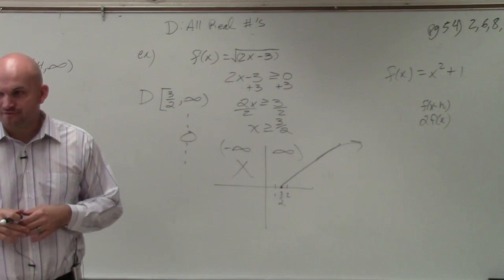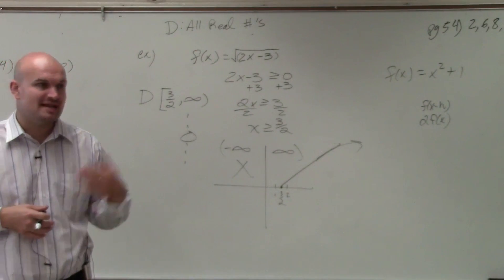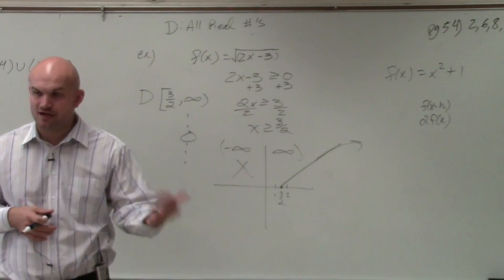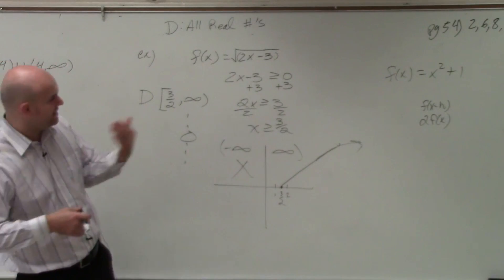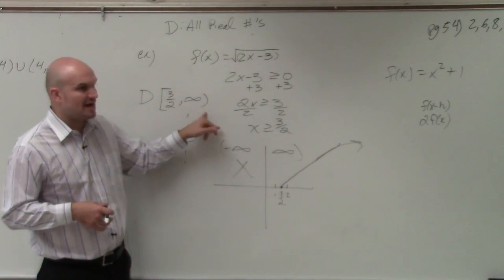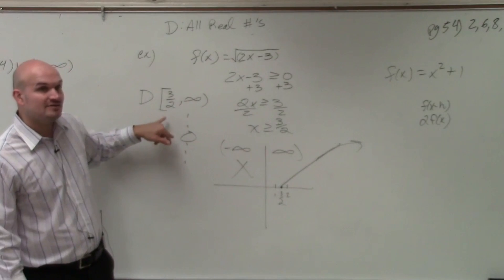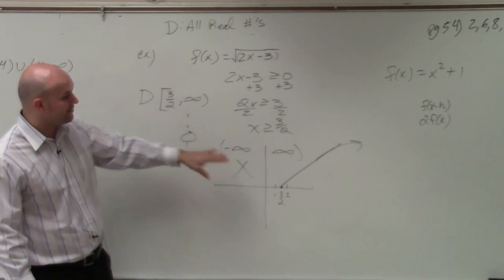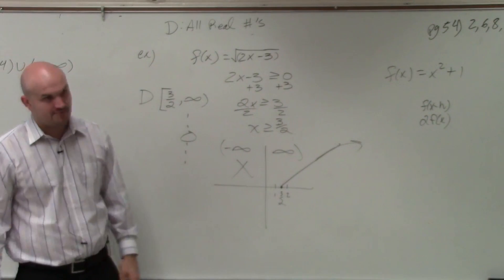When it's not a value of the function or it's not a finite number like infinity or such as infinity or negative infinity, we're going to use parentheses. But if it's a number that is evaluated for our function, we're going to use a bracket.